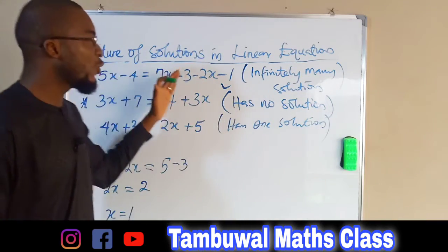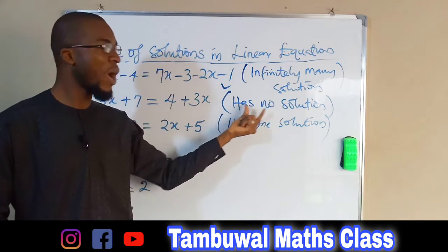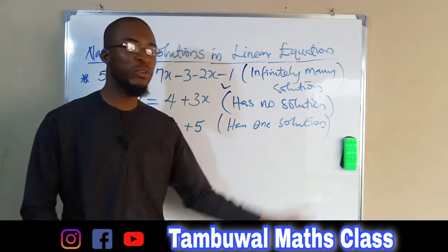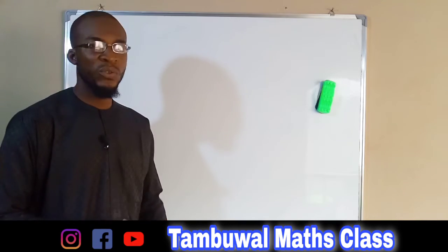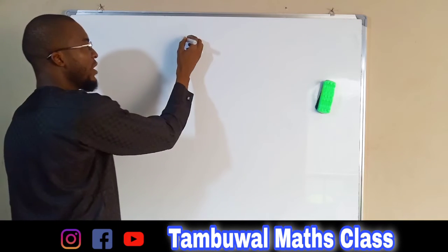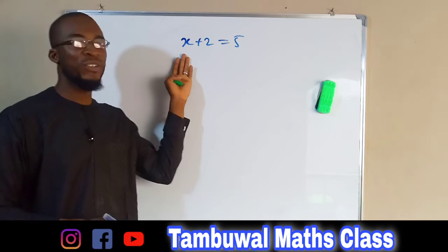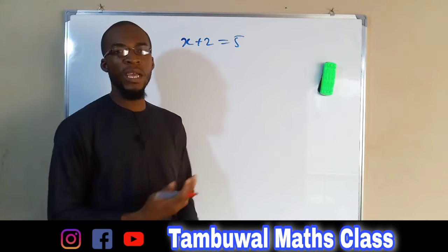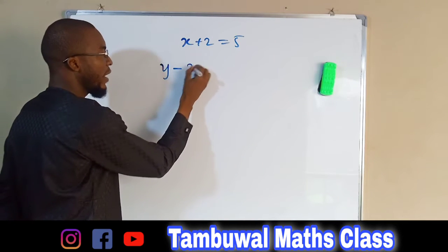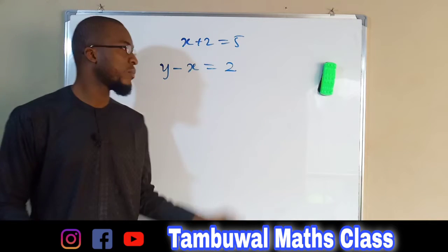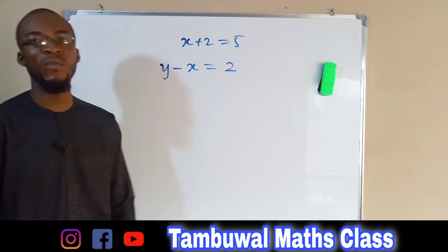So this is all about the nature of solutions for linear equations — sometimes infinitely many solutions, no solution, or only one solution. Now let us look at simultaneous linear equations. So far we have seen examples with only one unknown variable, like x plus 2 equals 5. But in linear equations you may get multiple unknown variables, for example y minus x equals 2. This is a linear equation with two unknown variables.